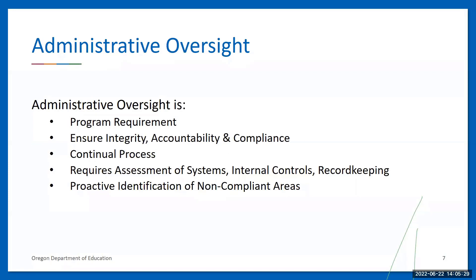Let us start with what administrative oversight is. CACFP administrative oversight is the process of planning, organizing, and managing all aspects of CACFP operations. Administrative oversight is a program requirement in place to ensure that all components of the CACFP are operated with integrity, accountability, and in compliance with regulations. It is a continual process that requires sponsors to assess the effectiveness of systems and internal controls in place, to verify accurate and reliable operations and record keeping, and to proactively identify areas of non-compliance.